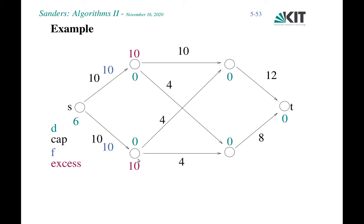Let's look at an example using our standard network. The green labels give the distance function. With simple initialization, all distances are set to zero except the source, which is set to six (the number of vertices). Initialization saturates the outgoing edges from s, creating two active nodes each with excess ten. We select one of these active nodes for the first iteration.